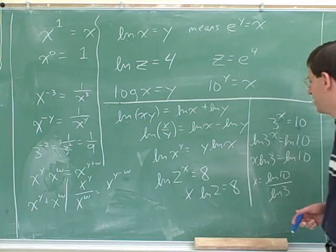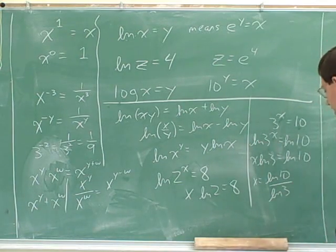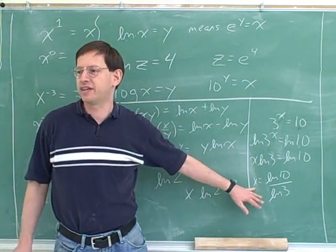This is not very good handwriting, but this is supposed to be ln for natural log, the way it would look in your calculator. And now you can do this on your calculator and figure out what x is.